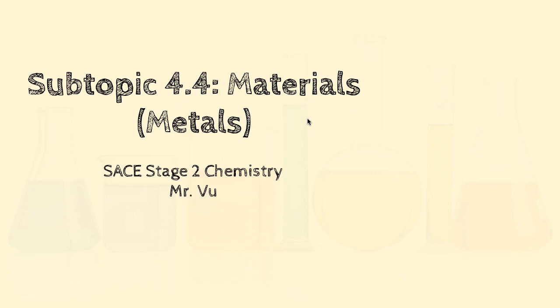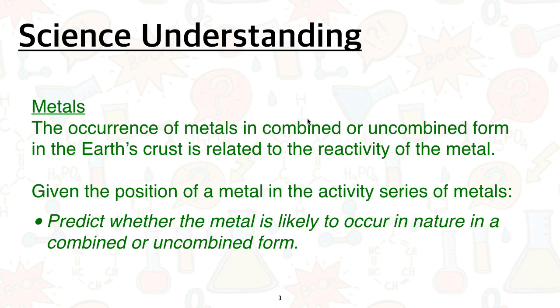Today we'll be looking at the next part of 4.4 Materials, focusing on metals — in particular the production of metals and the methods used based on their reactivity. We start by looking at the occurrence of metals in combined or uncombined form in the earth's crust and how that's related to reactivity. Given the position of a metal in the activity series, you need to predict whether it likely occurs in nature in a combined or uncombined form.